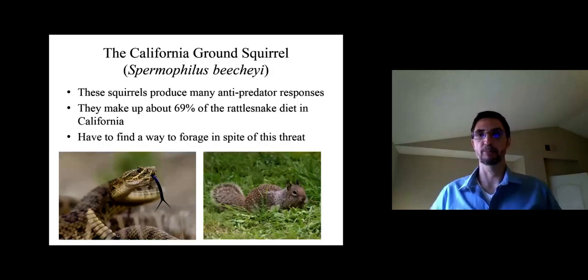And because of that they have to have many anti-predator responses. They have to find a way of dealing with threats. And one of the most notorious threats to these squirrels is the rattlesnake. About 69% of rattlesnake diet in California comes from these squirrels. So rattlesnakes and other snakes are dangerous, but squirrels have to find a way of dealing with them.